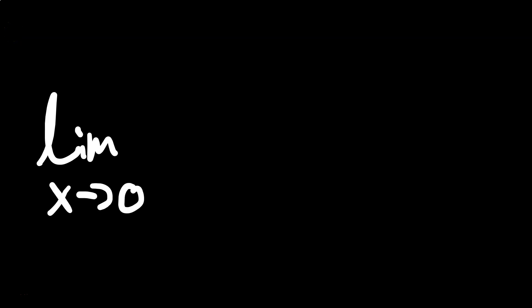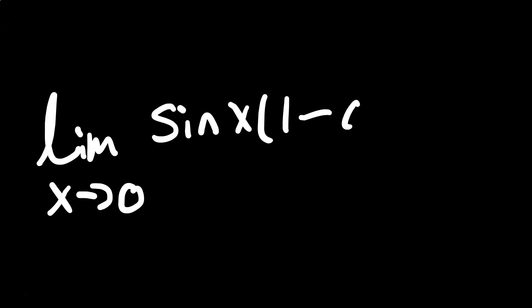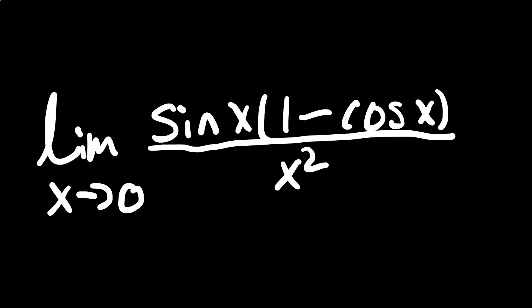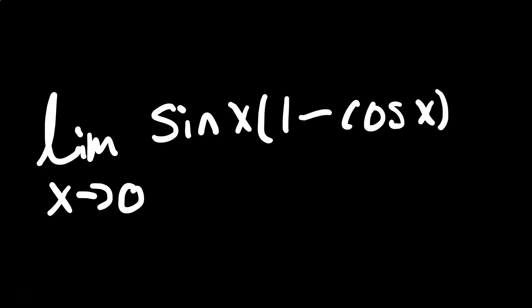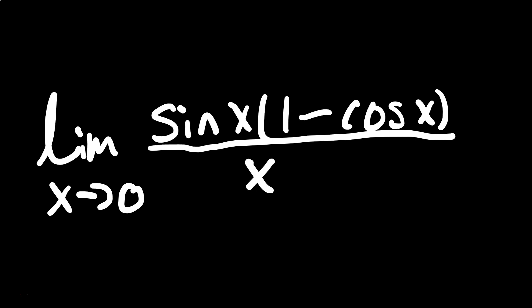In this one, we're going to find the limit as x approaches 0 of sine of x times 1 minus cosine x divided by x squared. So first, it's going to be the limit as x approaches 0. Then you're going to have sine of x times that 1 minus cosine x. But in the bottom, it becomes x times x — that's the big difference now.